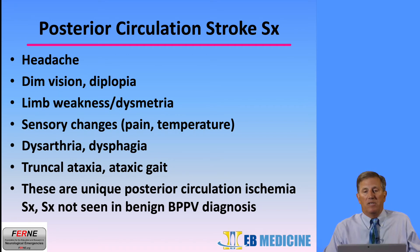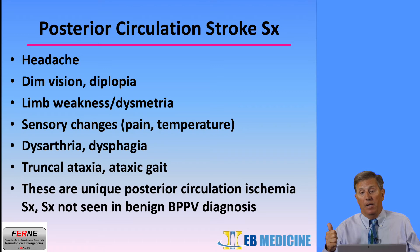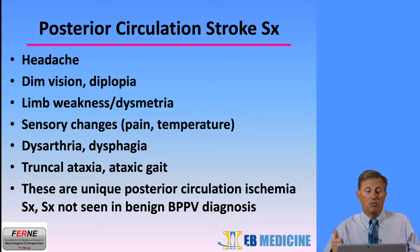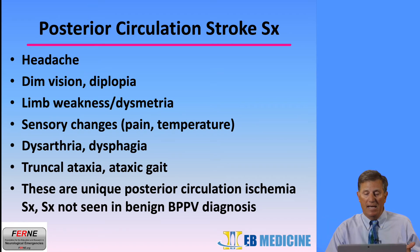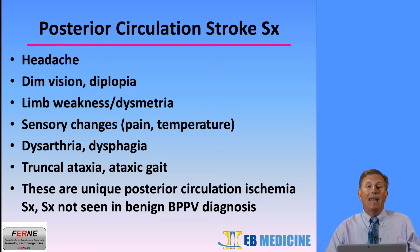What are the findings that would suggest posterior stroke in a patient with acute vestibular syndrome? Headache — not common in BPPV, but more likely with posterior circulation stroke. Also: diplopia, limb weakness, dysmetria, sensory changes especially pain and temperature, dysarthria, dysphagia, truncal ataxia, and ataxic gait. These findings are unique to posterior circulation ischemia and are not seen with the more benign BPPV diagnosis.